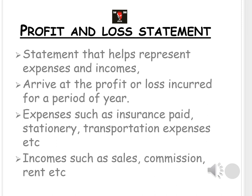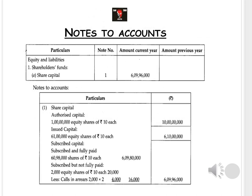The profit and loss statement is a representation of the total expenses and incomes of the firm for a year. By calculating all expenses and incomes, we determine whether the company has earned a profit — where income exceeds expenses — or a loss — where expenses exceed income. Through this statement we can make a deep analysis of all transactions and identify which expenses are heavier compared to income, so the company can later decide to reduce them.